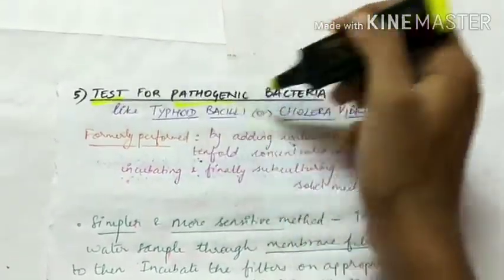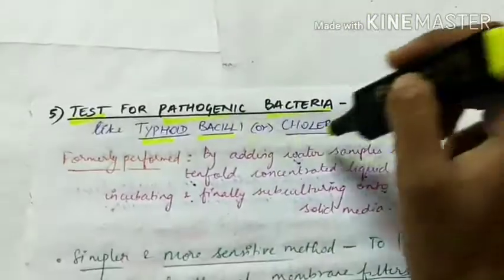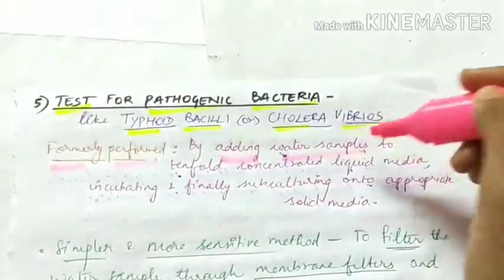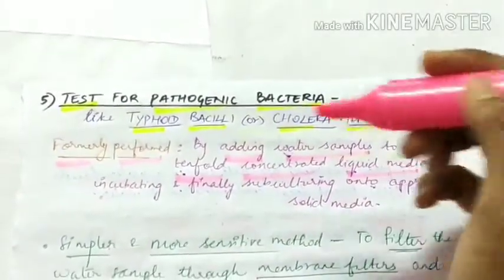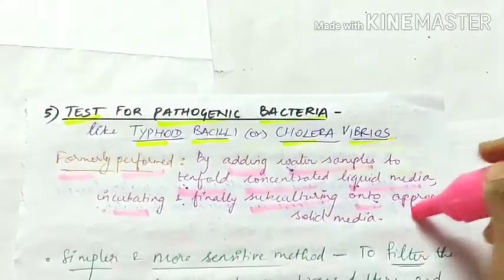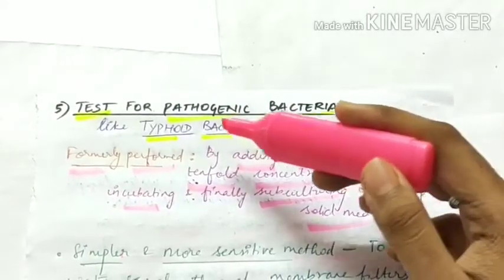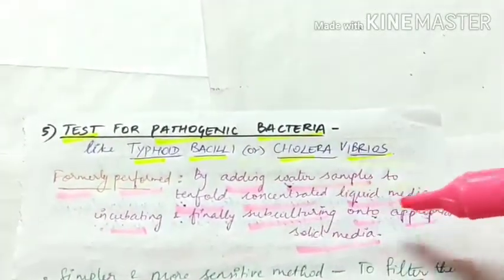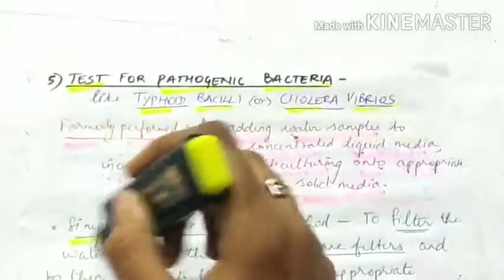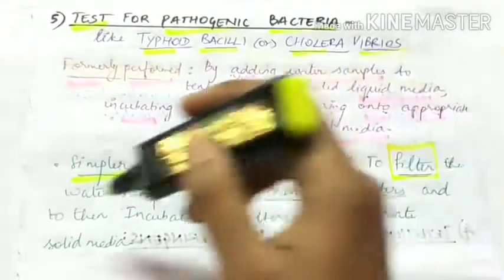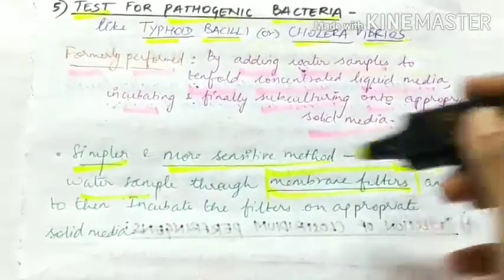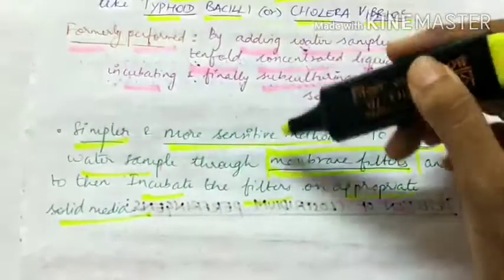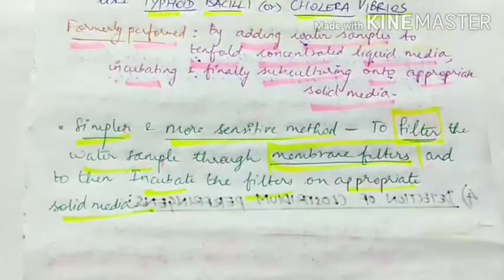For testing pathogenic bacteria such as typhoid bacilli or cholera vibrios, the older method involved adding water samples to 10-fold concentrated liquid media, incubating, and subculturing onto appropriate solid media. Nowadays a simpler and more sensitive method is to filter the water sample through membrane filters and then incubate the filters on appropriate solid media. This concludes the topic of bacteriology of water.